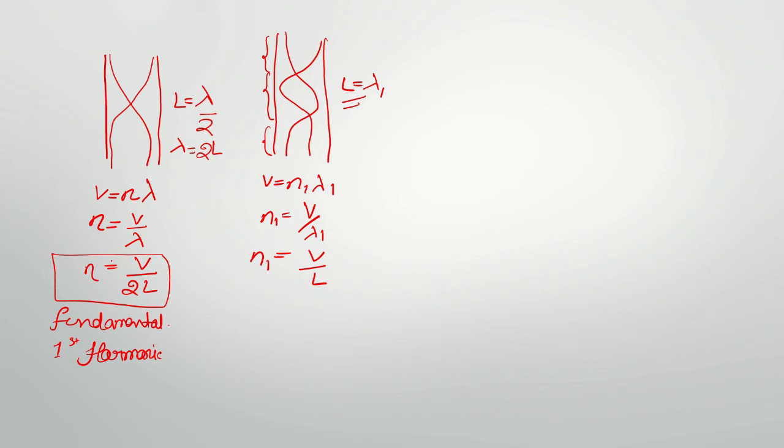We want to write this n1 in terms of n. So multiply and divide by 2. So that will become 2 times V by 2L. So n1 is 2 times of fundamental. This is your first overtone. And harmonic is your second harmonic because it is 2 times fundamental.